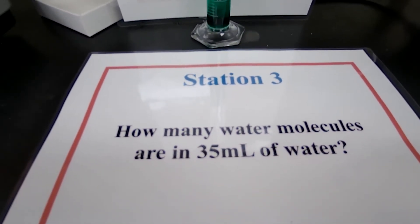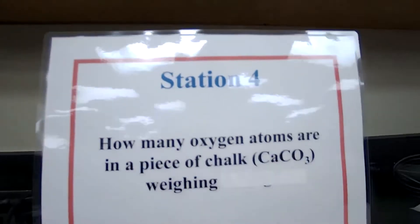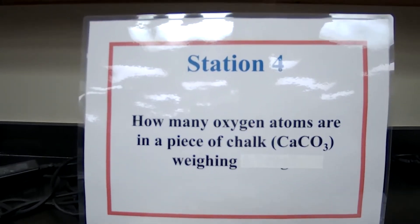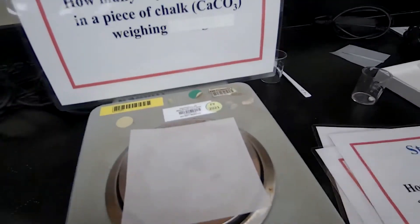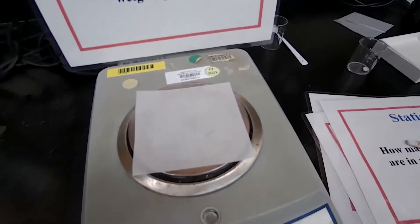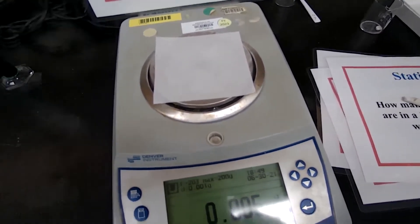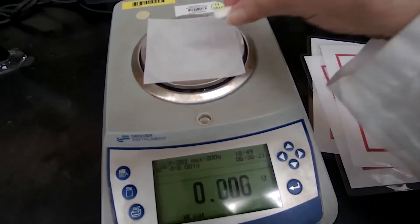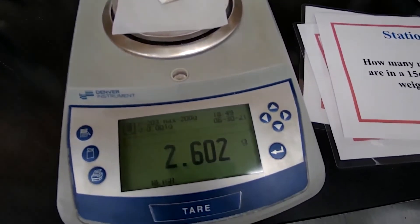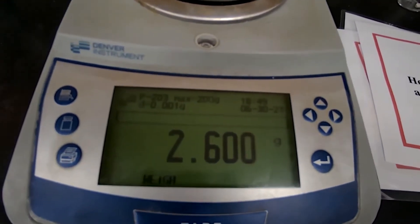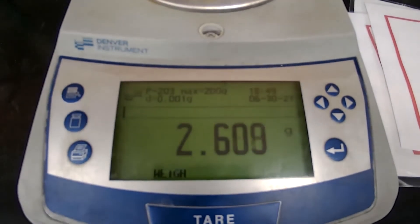In station 4, you are measuring a piece of chalk. You will get the first mass of the weighing paper tared by the balance, and then you place the chalk on the scale and record the mass. You may pause the video at any time if you didn't get a chance to record it.